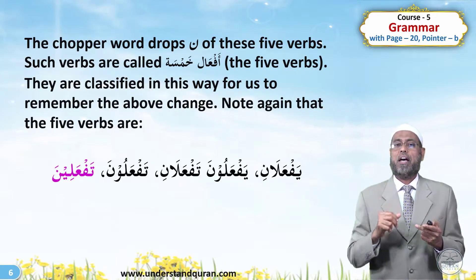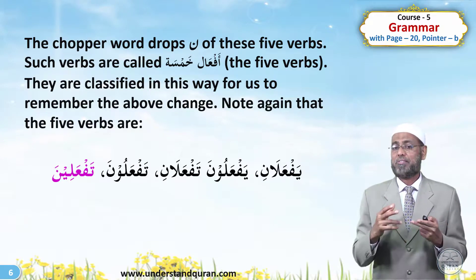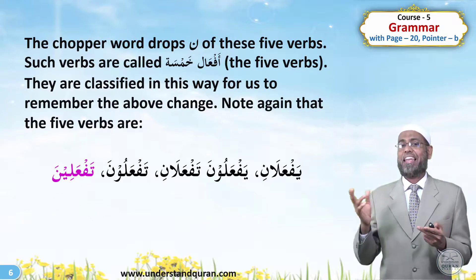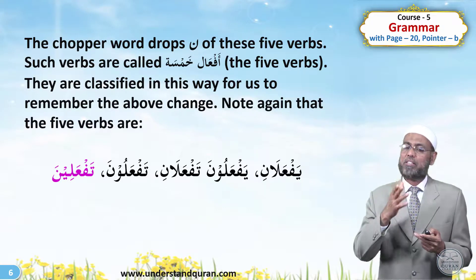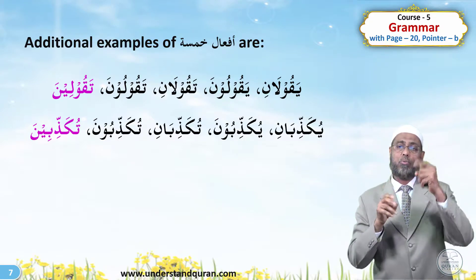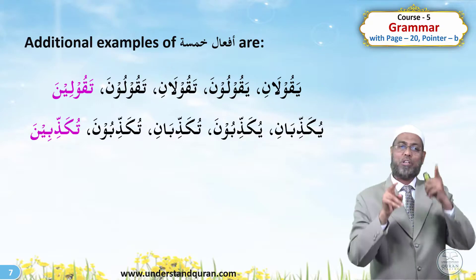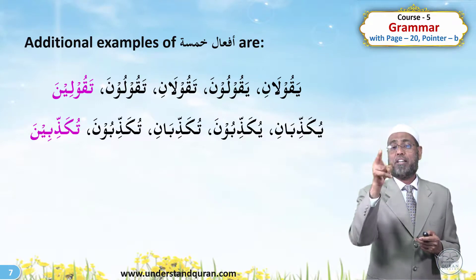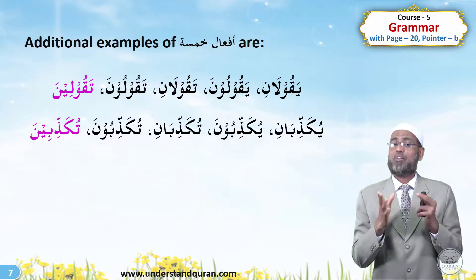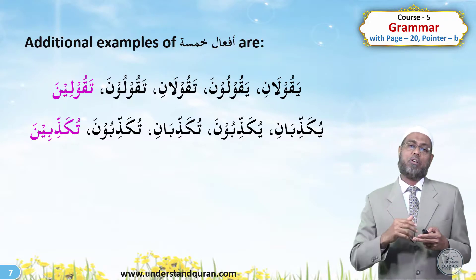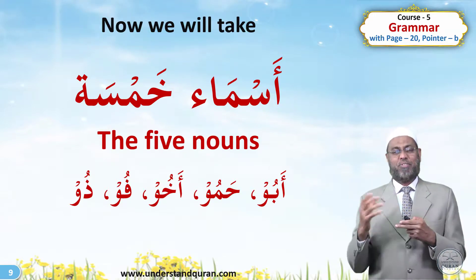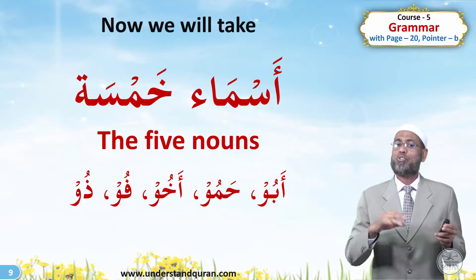These five verbs are those where if you have a chopper word before them — like lam, lamma, or even a hammer word like lan — the noon drops. Like fa-il lam tafa'aloo wa lam tafa'aloo is the best example. It can be any verb: yukadhibani, yukadhibona, tukadhibani, tukadhibona, tukadhibina. The Quran is full of this: fabi-ayyi alai rabbikuma tukadhiban. These are the five verbs which get their noon dropped after a chopper or hammer word.